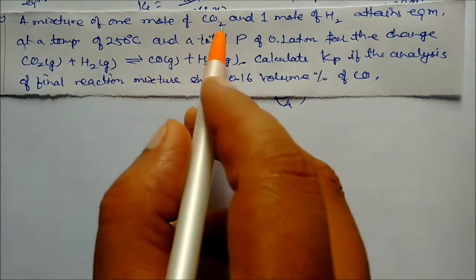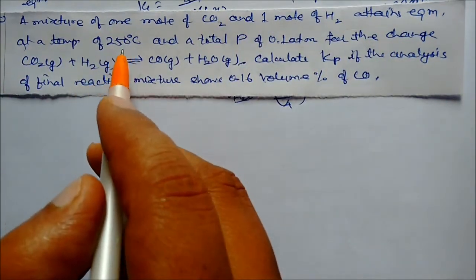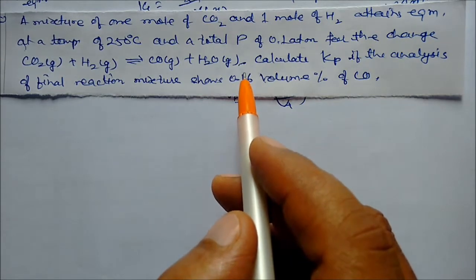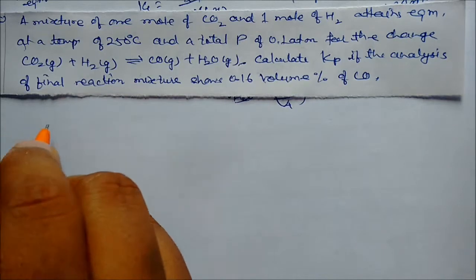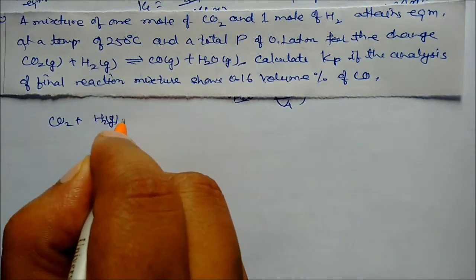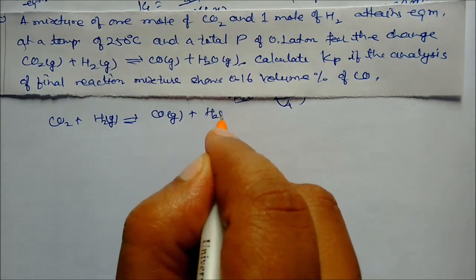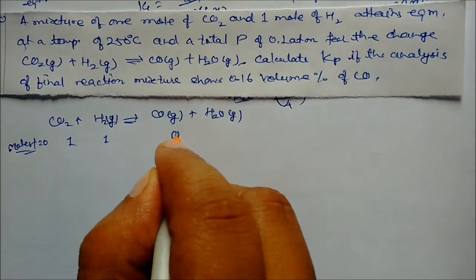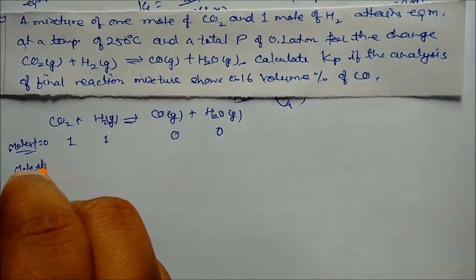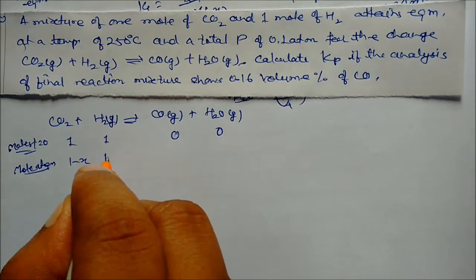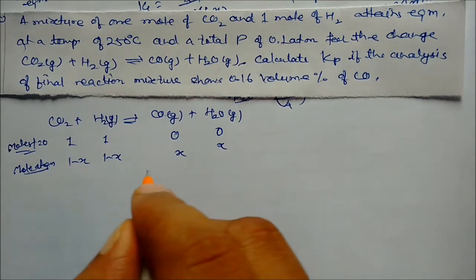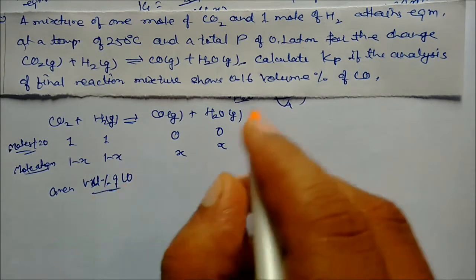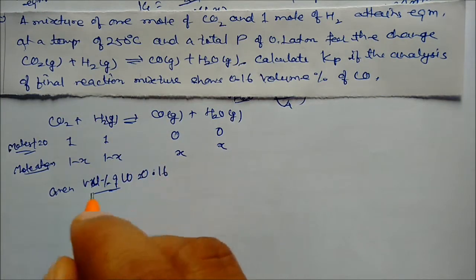Next problem: A mixture of 1 mol CO₂ and 1 mol H₂ is brought to equilibrium at 25°C and total pressure 0.1 atm. Reaction: CO₂ + H₂ ⇌ CO + H₂O (gas). Analysis shows the final equilibrium mixture has 0.16 volume percent CO. We need to calculate Kp.